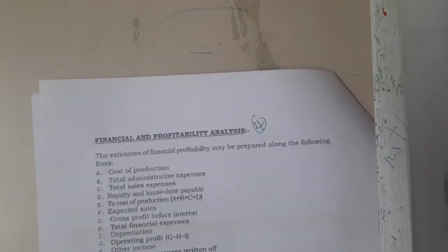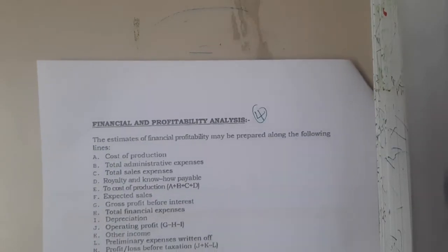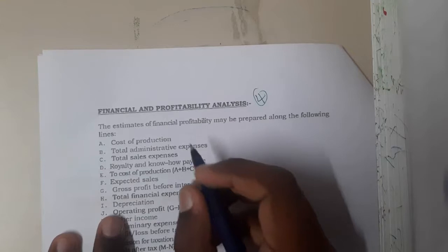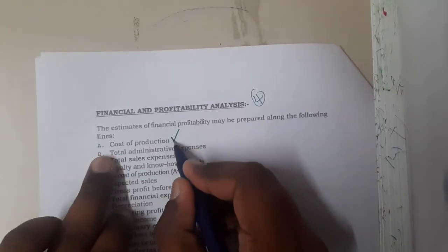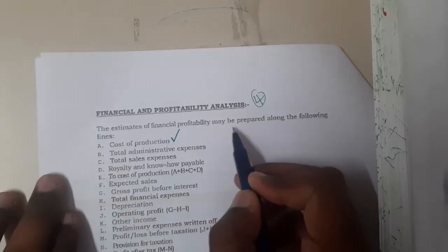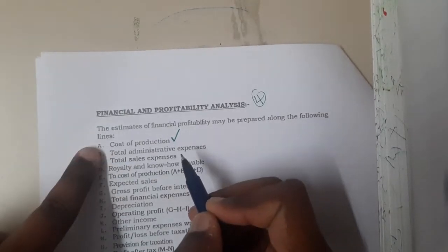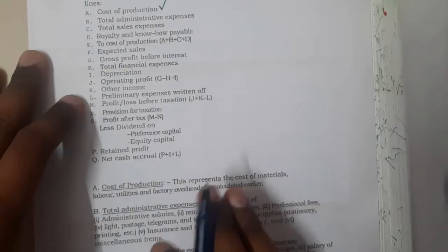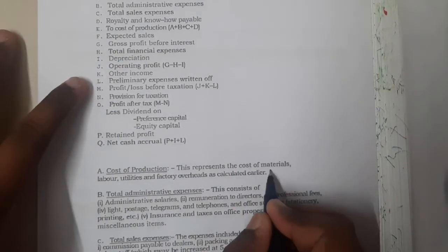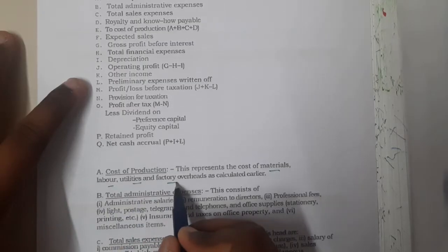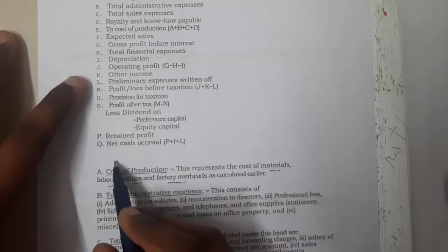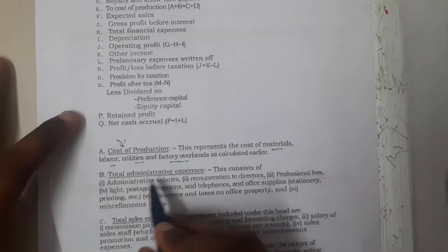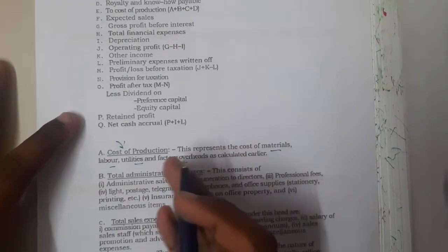Now let us go through the original topic, that is financial and profitability analysis. We will be discussing various terminology. The first is the cost of production. The estimation of financial profitability may be prepared along the following lines. The cost of production is the total cost of your particular product — it includes material cost, labor cost, utilities cost, factory overheads, and everything.